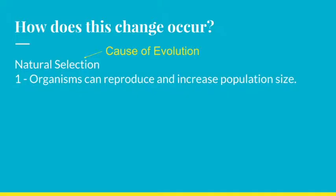First, organisms have the ability to reproduce and therefore can increase their population size. As long as organisms can continue to reproduce and possibly increase their population, natural selection can occur.